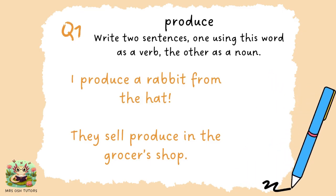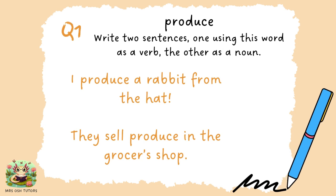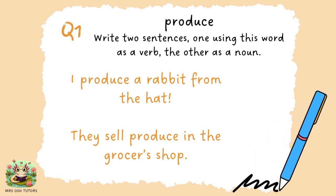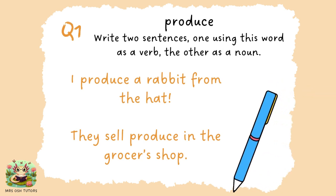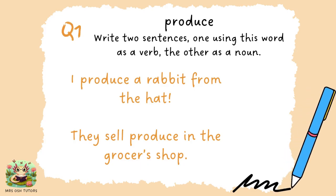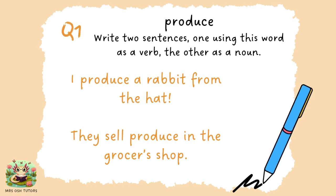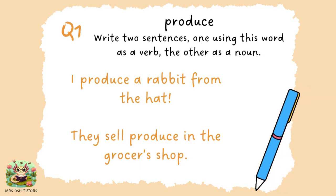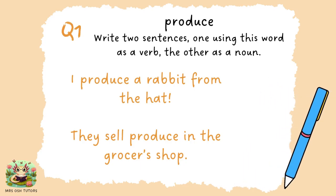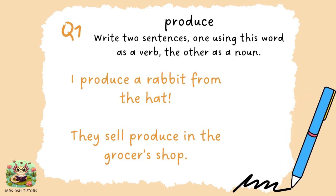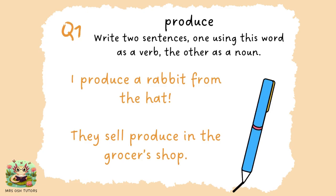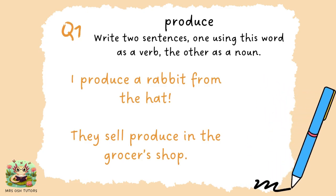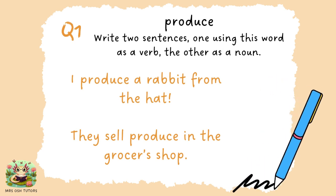Question one. The word is 'produce' or 'produce' — the emphasis depends on whether you're using it as a noun or a verb. In the first sentence: 'I produce a rabbit from the hat' means I'm pulling or making a rabbit from the hat. In the second: 'They sell produce in the grocer's shop' — the emphasis is on the first syllable. Produce here means things like fruit and vegetables. You may have written a different sentence, but as long as you meant something similar, you've got it correct.